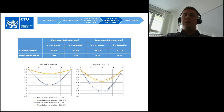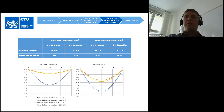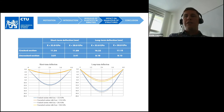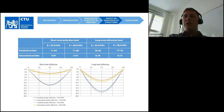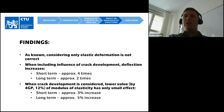Here are the results of the calculations. We can see that the short-term deflection rises about four times when the section is cracked, and the difference between different values of modulus of elasticity is low. Similarly for long-term deflection, the impact of modulus of elasticity is also low, but the effect of cracking of the structure leads to approximately two times higher deflection.